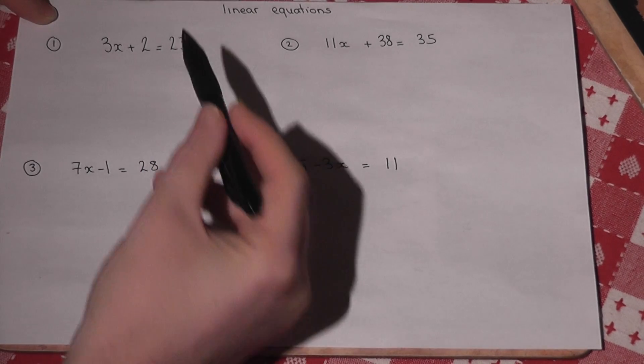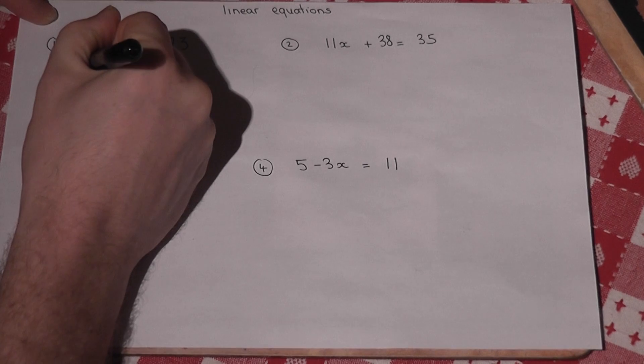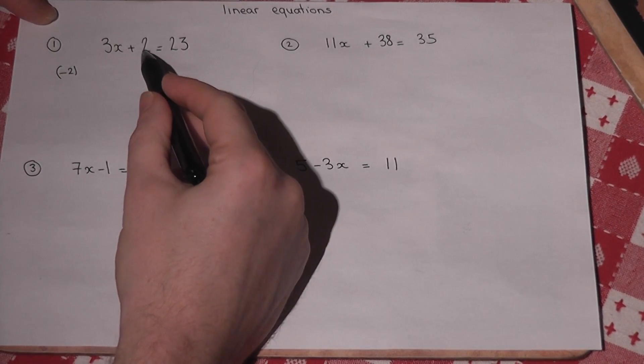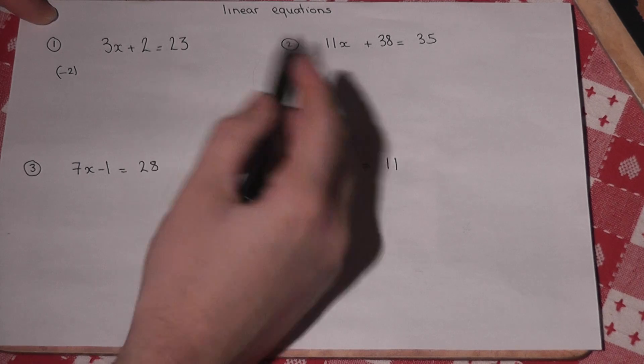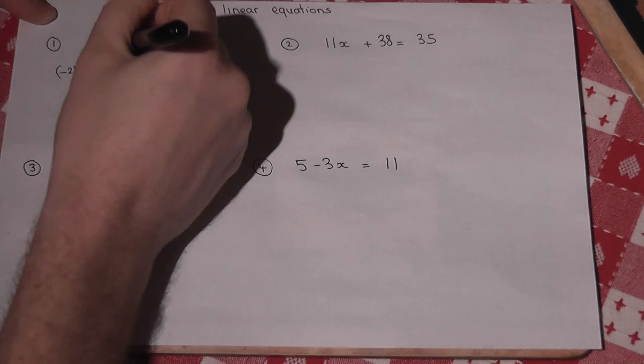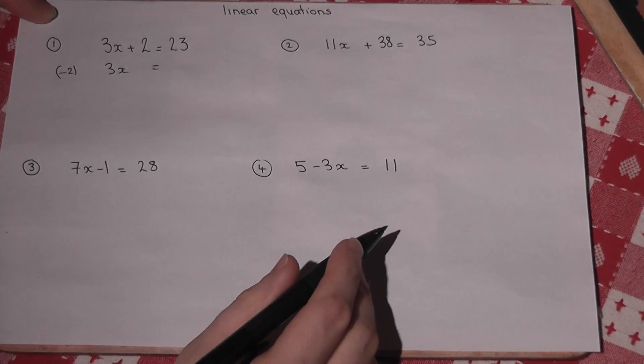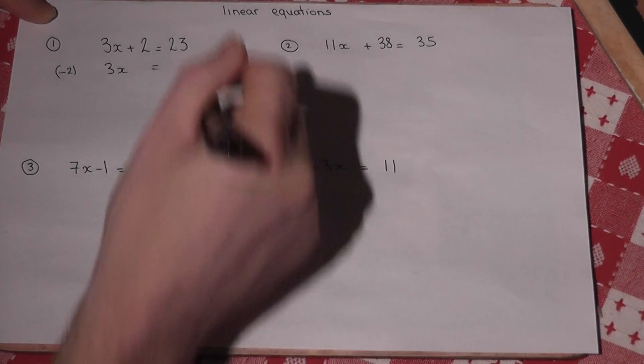If we begin by taking 2 from both sides, the plus 2 here will be cancelled out. So we're left with 3x and we've taken 2 from both sides so we're left with 21.